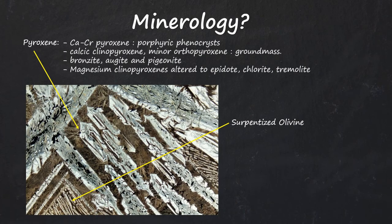Pyroxene. Ca-Cr pyroxene is seen as porphyritic phenocrysts. Calcic clinopyroxene and minor orthopyroxene forms ground mass. Pyroxenes are thus in the form of bronzite, augite and pigeonite. Magnesium clinopyroxenes are inconsistently altered to epidote, chlorite and tremolite.